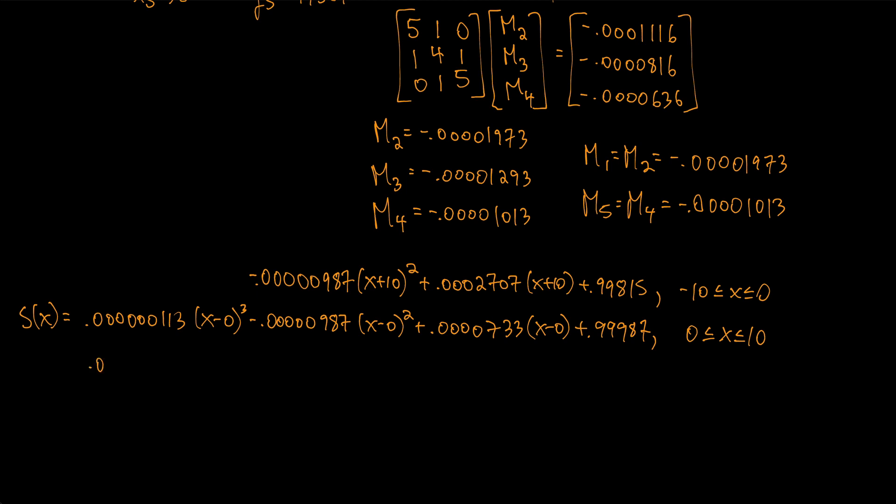So then we have 0.0000000047 times (x-10)³ - 0.000000647(x-10)² - 0.0000000(x-10) + 0.99973. That's for between 10 and 20.